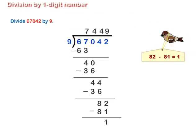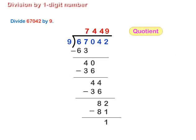82 minus 81 is equal to 1. Therefore, the quotient is 7,449 and the remainder is 1.